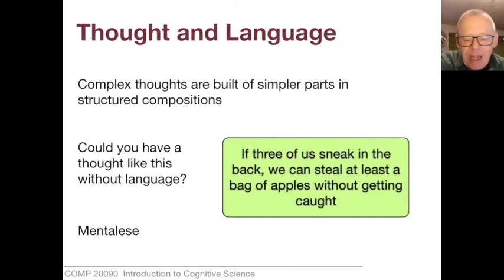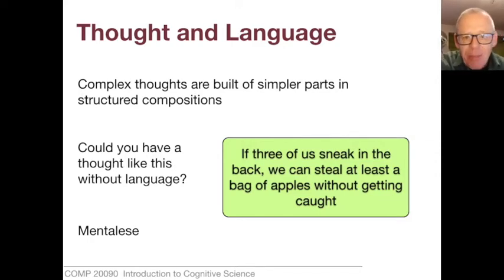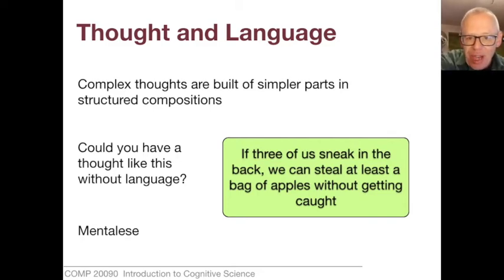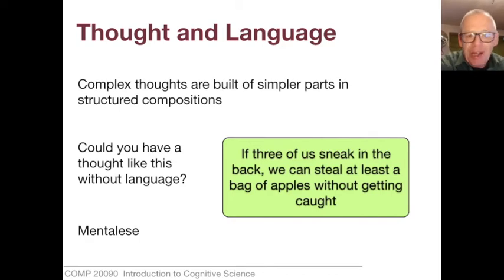Back when I was a kid, we used to rob orchards — climb over walls and go in and steal apples. Imagine three young boys planning on stealing some apples. One of them might have a thought, which I'm going to write here as a sentence, but which I want you to think of as more of an internal plan: 'If three of us sneak in the back, we can steal at least a bag of apples without getting caught.' I can totally believe that I had that kind of thought prior to stealing apples from an orchard.